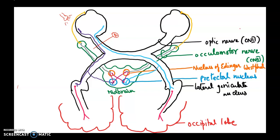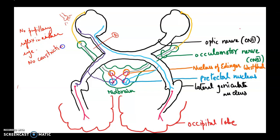If you have damage to the left cranial nerve and you are flashing light on the left eye, will the information be transmitted to the occipital lobe? No. The purple neurons are damaged, so information cannot reach the pre-tectal nucleus and nucleus of Edinger-Westfall. The blue neuron carrying information to the opposite side is also damaged. Therefore, we have no pupillary reflex in either eye — no constriction of the left or right pupil.